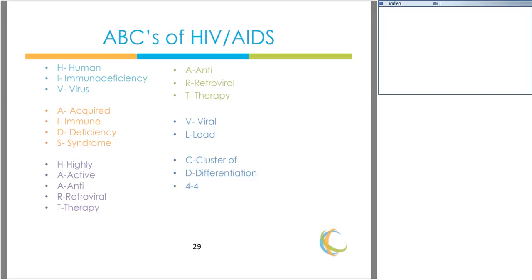HAART, or highly active antiretroviral therapy, is the name we give to combination antiretroviral therapy. For most current references, we simply refer to antiretroviral therapy, or ART. You'll sometimes see the term viral load, abbreviated as VL, and you'll often see CD4 in reference to a CD4 cell or CD4 count, which we'll discuss shortly. CD4 is an acronym for cluster of differentiation.